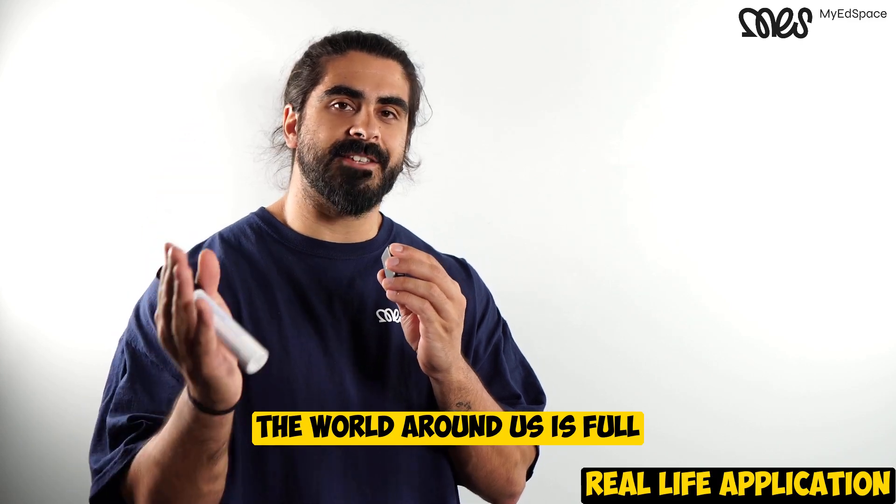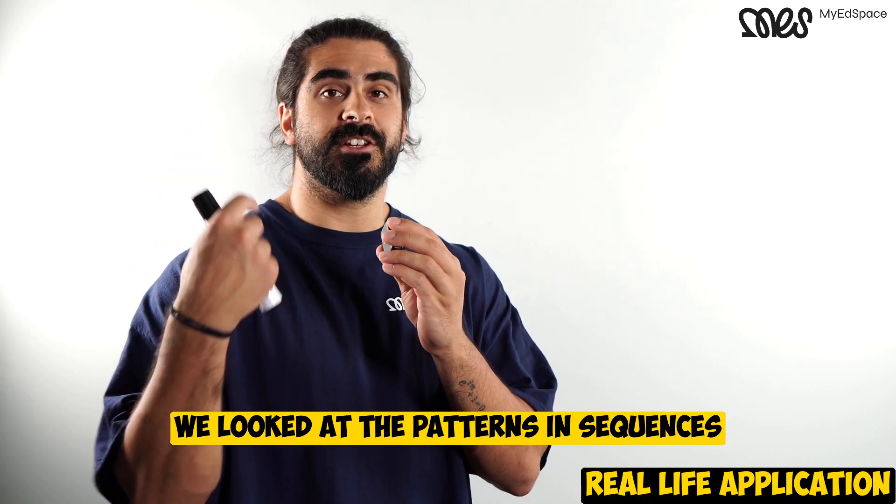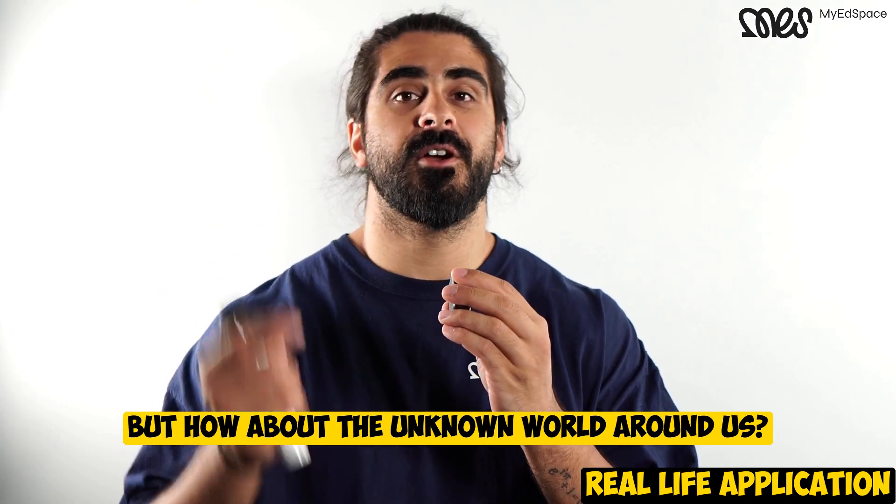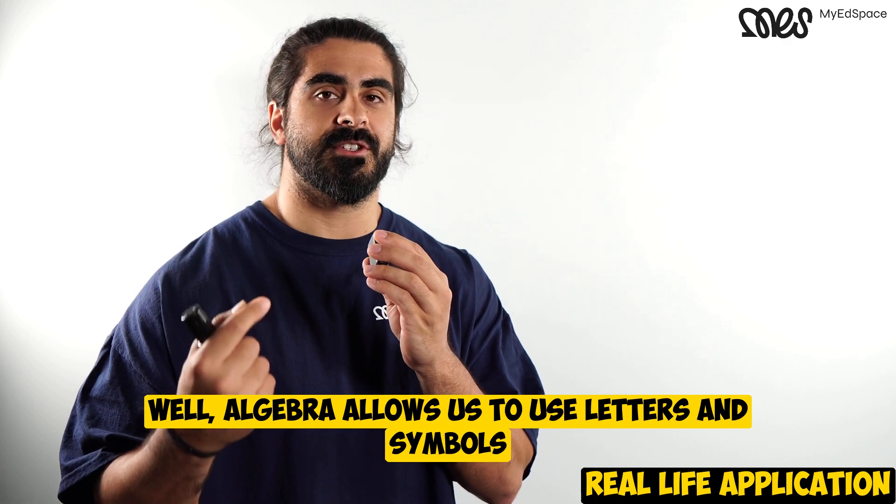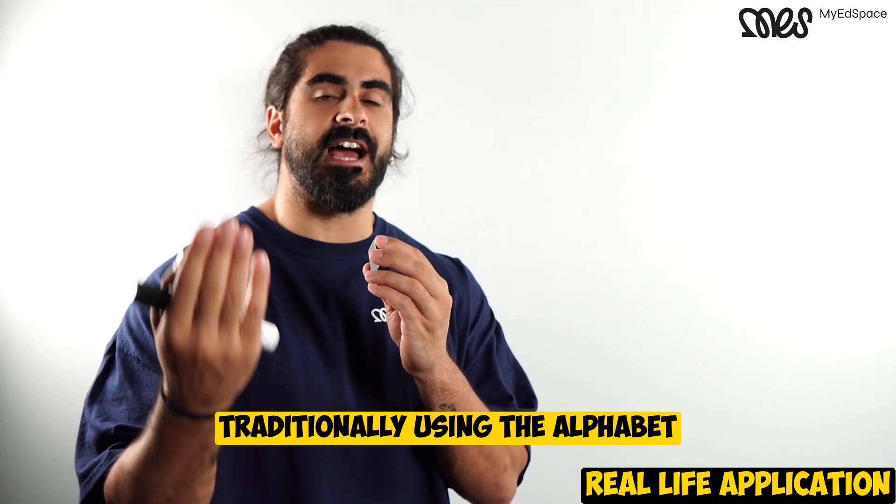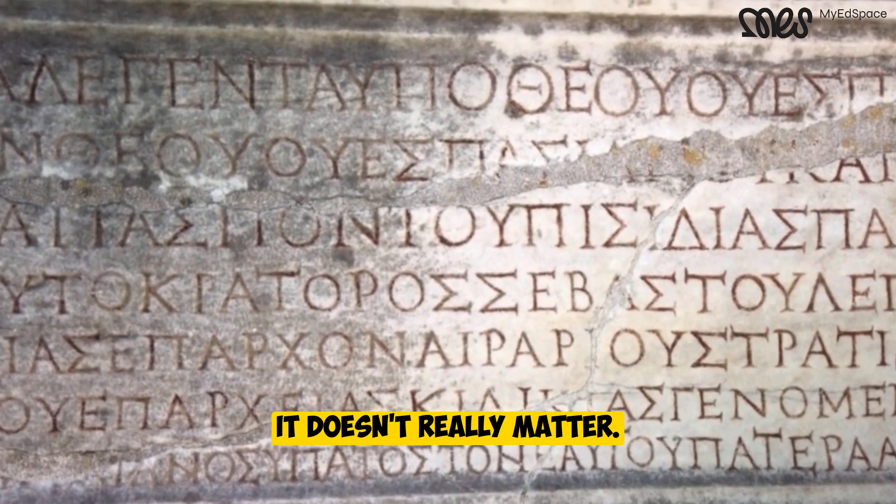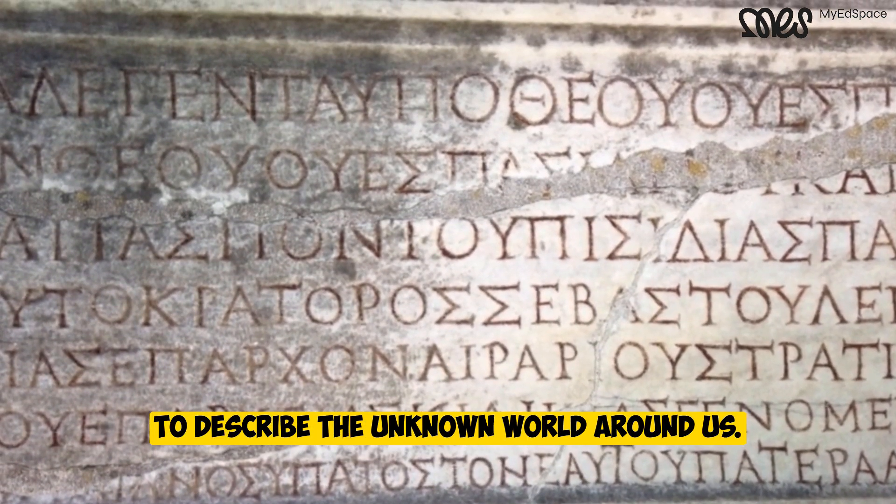The world around us is full of patterns and unknowns. We looked at patterns and sequences, but how about the unknown world around us? Well, algebra allows us to use letters and symbols, traditionally using the alphabet, whether it's the English alphabet or the Greek alphabet, to describe the unknown world around us.